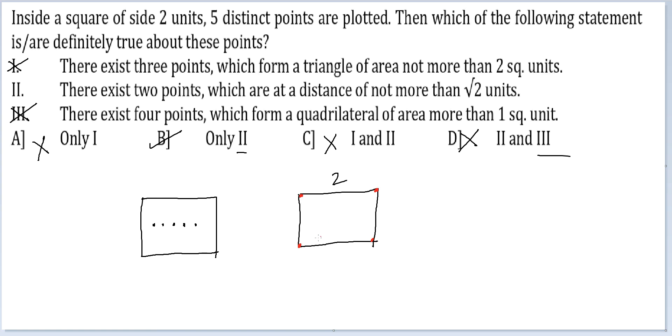So between any two adjacent points, you have a distance of 2. And between any two opposite points, you have a distance of 2 root 2, which is the length of the diagonal.